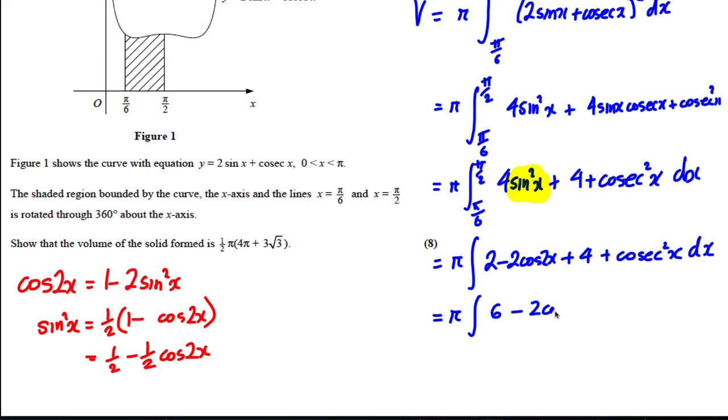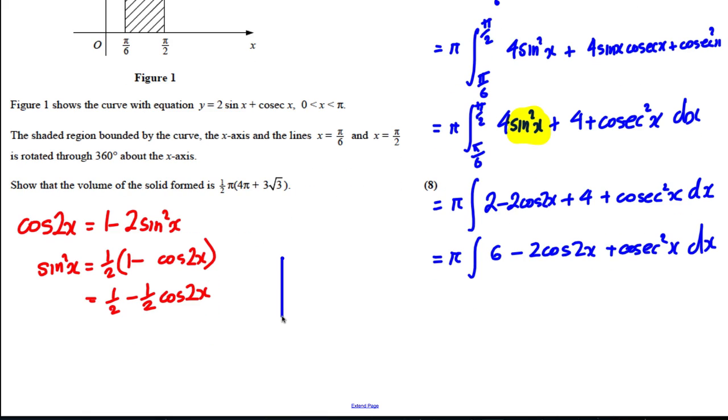Which is pi times the integral 2 and 4 is 6, so it'd be 6 subtract 2 cos 2x plus cosec squared x dx. Now do I know the integral of cosec squared? Well actually, if I look in my formula booklet I do.